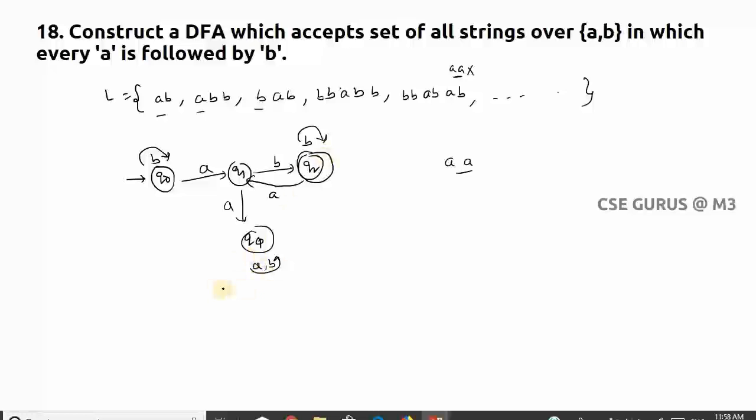You can check for anything. Let us suppose if I want to check for this one 'bbabb'. So 'b' self-loop, one more 'b' again self-loop, 'a' here and 'b' here q2, and one more 'b' coming to here.